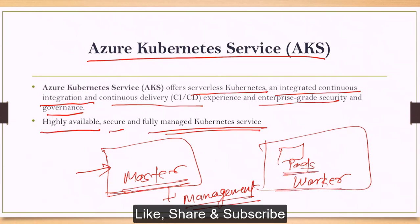Inside those pods, our containers run. We can have multiple worker nodes and similarly multiple master nodes, but at a time only one master will be active to manage things for these containers. Our target is always to run our application — those applications can be run on a virtual machine, a physical server, or a container. This is similar to how we have a cluster or load balancer; similarly, to manage containers we have Kubernetes services.